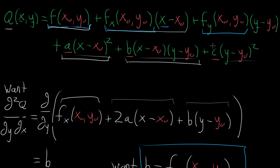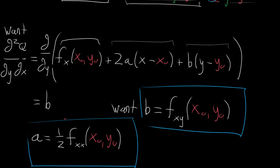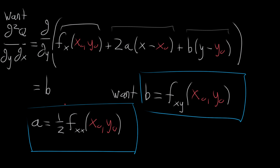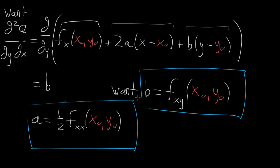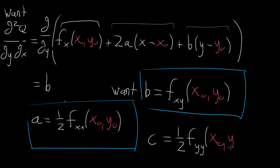For c, the reasoning is almost identical and symmetric — we do everything we did for x but instead take the partial derivative with respect to y twice in a row. I encourage you to work through that yourself to solidify these computations. You'll reach the same type of conclusion: c = ½ f_yy(x₀,y₀), where you differentiate with respect to y twice evaluated at the point of interest.